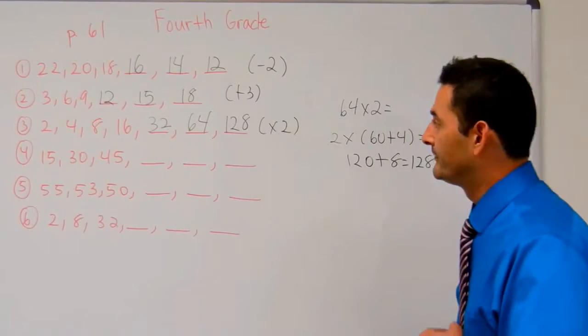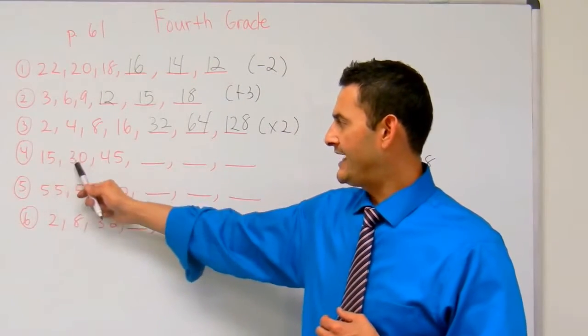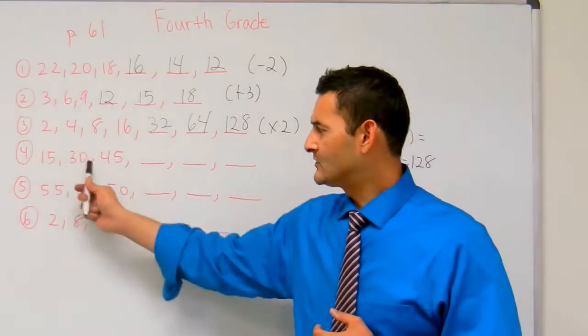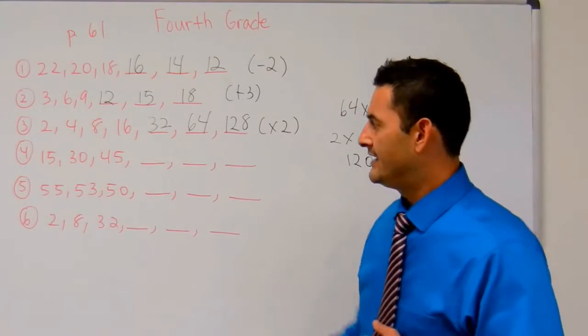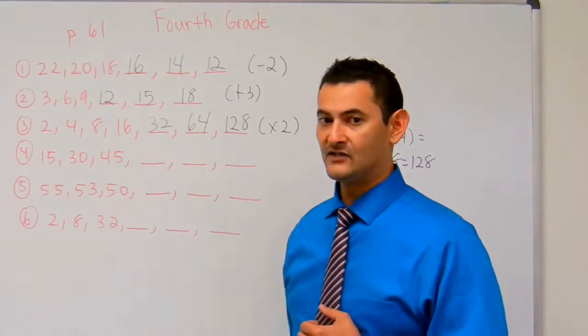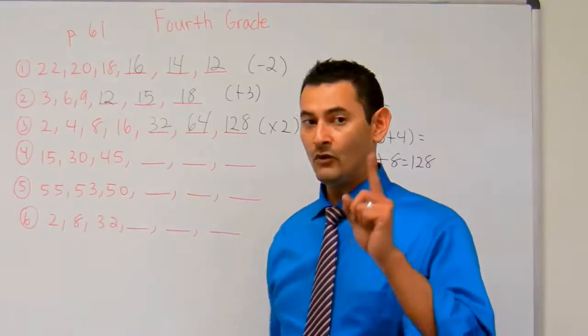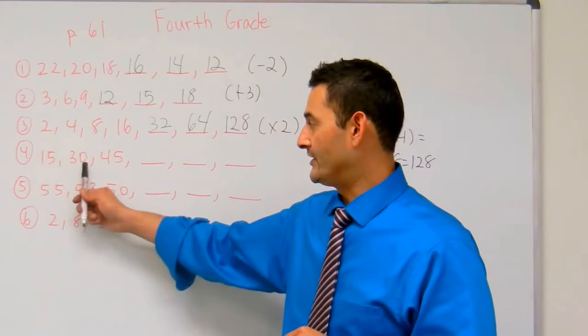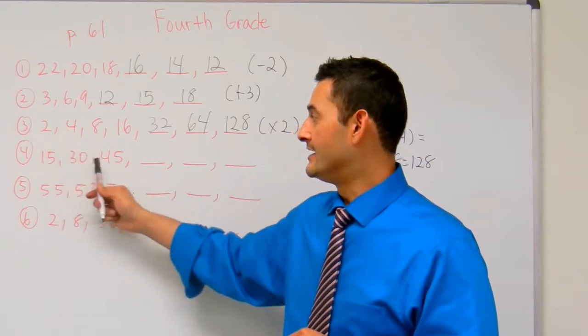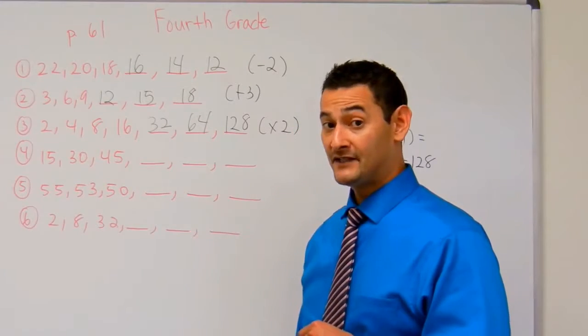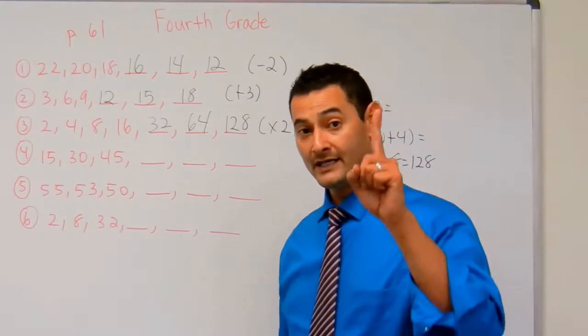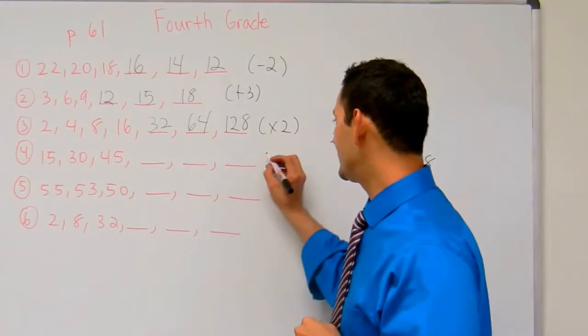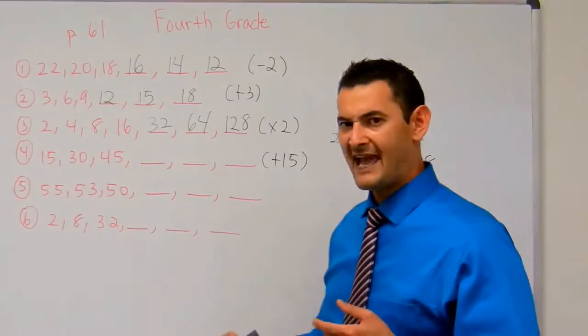Now let's take a look at number 4. Here I have 15, then it became 30, then it became 45. If I add 15 plus what equals 30? Here I've got 1 ten, and I've got 5 ones. So let's double it. So 15 plus 15, that's 30. So we have plus 15 here. Is that plus 15 here? 30 plus 15, does that equal 45? Yes, so this rule is going to be plus 15.